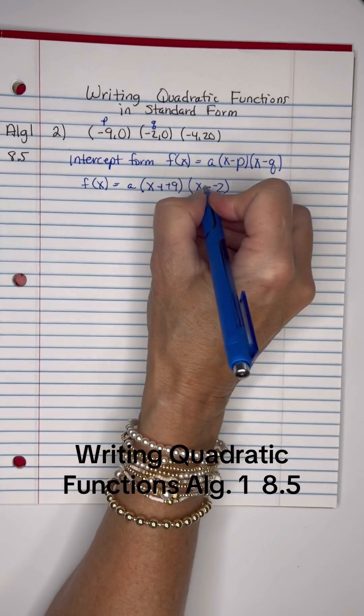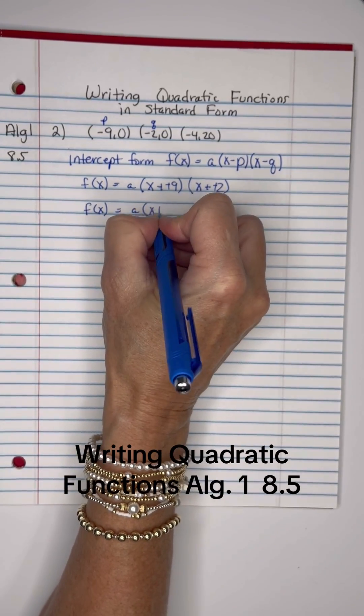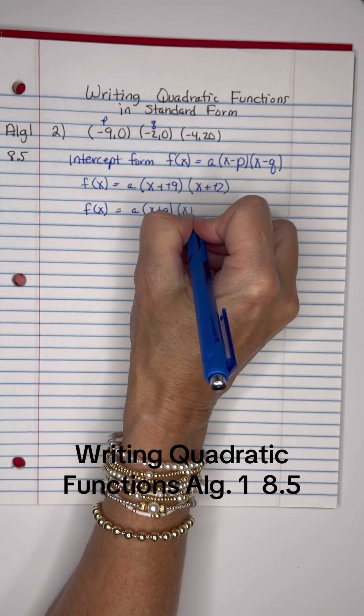Okay, we have to add the opposite on both of those just to make this look better. F(x) equals a times (x + 9) times (x + 2).